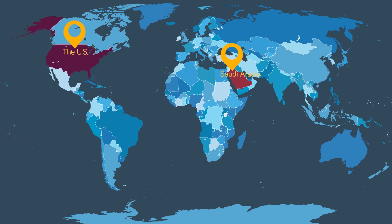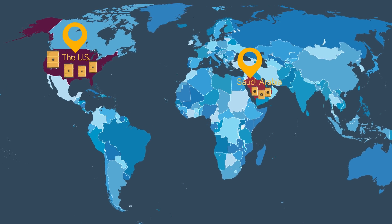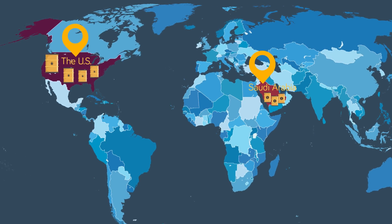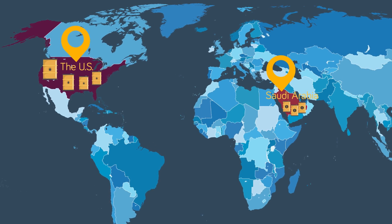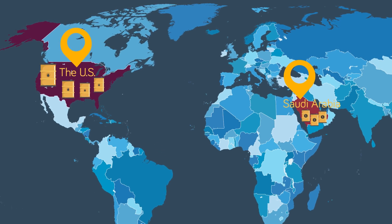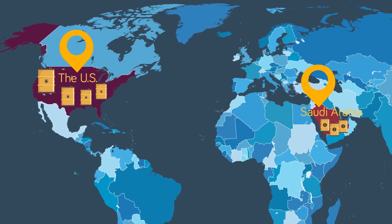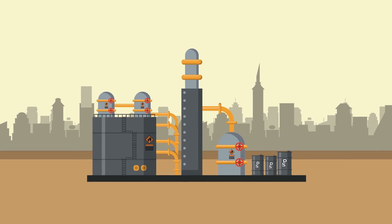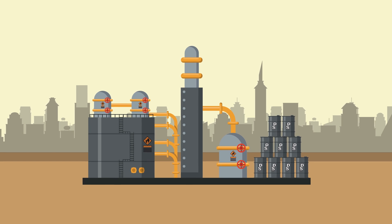Then in 1979 we got something called the US-Saudi Arabian Joint Commission on Economic Cooperation. In that agreement, Saudi Arabia agreed to use American dollars for their oil transactions. These dollars would get back into America through contractors, and so they were what are called recycled petrodollars. This deal with Saudi Arabia was the start of this petrodollar system.